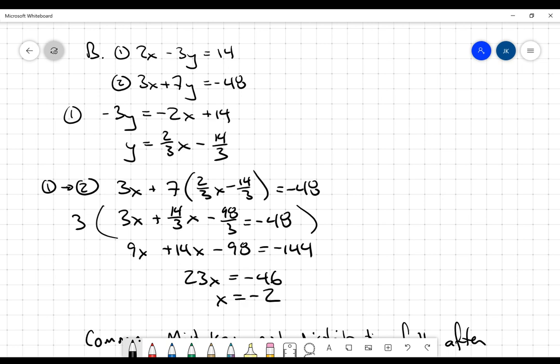Awesome. And now because I have this expression for y, I can substitute that into equation one. I'll get y equals 2 thirds of negative 2 minus 14 thirds. And when you evaluate that, we get negative 18 thirds or negative 6. Nice value here.